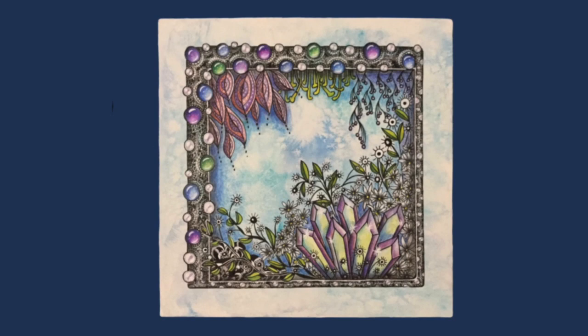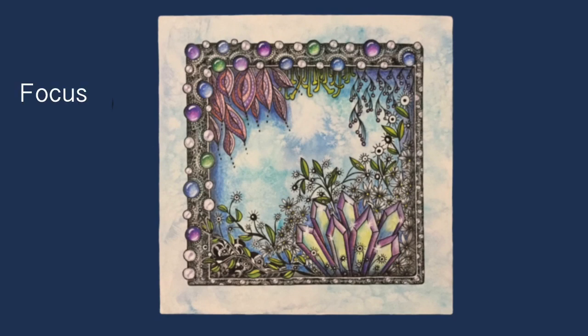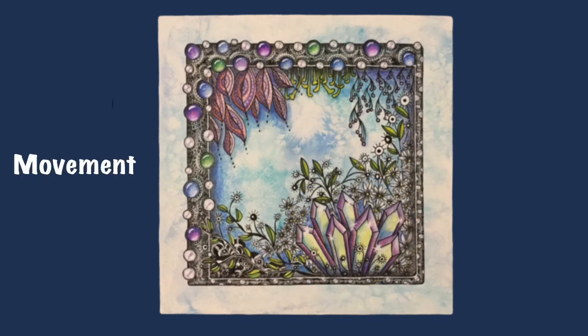Let's now look at what principles and elements are used. The main focus of this piece is the anthem down in the bottom corner. Another focus is up in the top left-hand side. Once our eyes have left those focused areas, we want to let them move across the page, and I've done that using line and shape. Organic lines radiate out from the anthem and then lead us up to the shapes of those jewels, which frame the page.